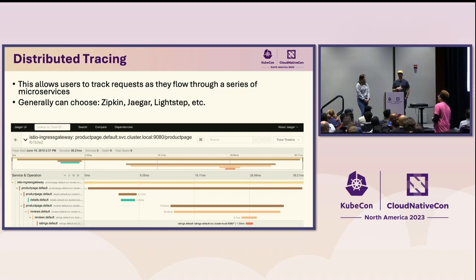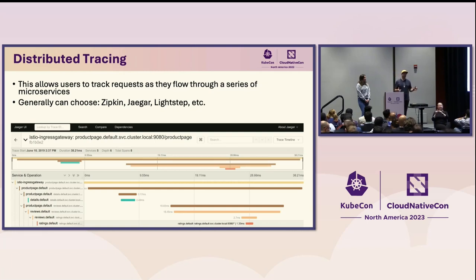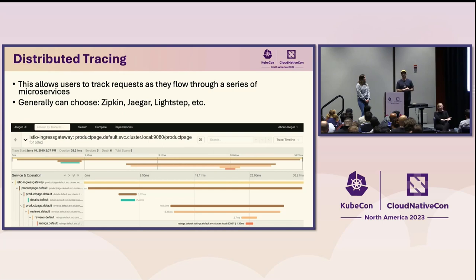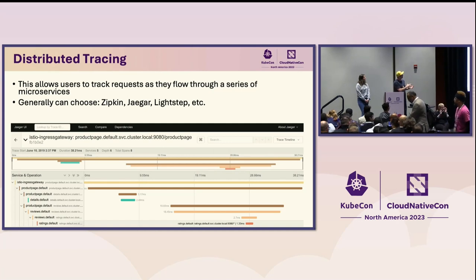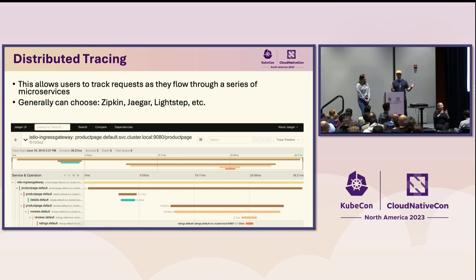Another observability feature is distributed tracing. When working with a distributed application, you're calling a series of services. From a customer standpoint, they just checked out of their shopping cart, going through a whole bunch of services. We need to track the customer experience through this distributed set of microservices — that's what distributed tracing does. The service mesh takes care of the hard part by connecting all those calls into a single span, labeled by the service mesh. Using tools like Zipkin or Jaeger, you can see that a customer's experience was maybe three seconds, but the bulk of the latency occurred in one particular service. Super helpful for troubleshooting.